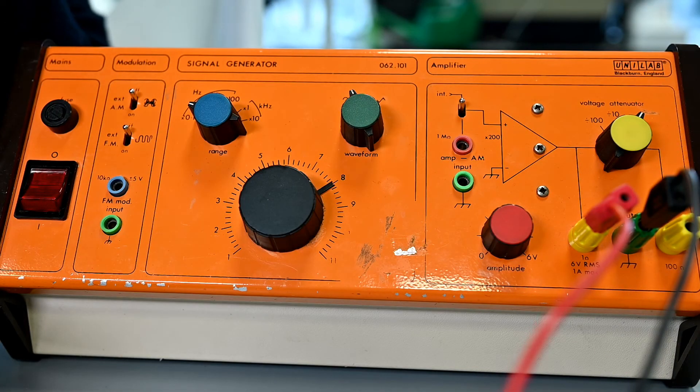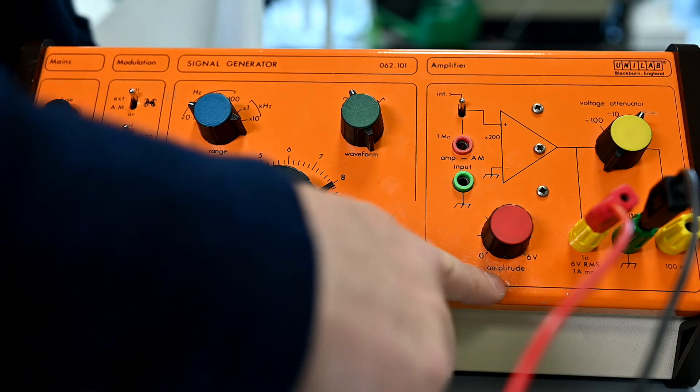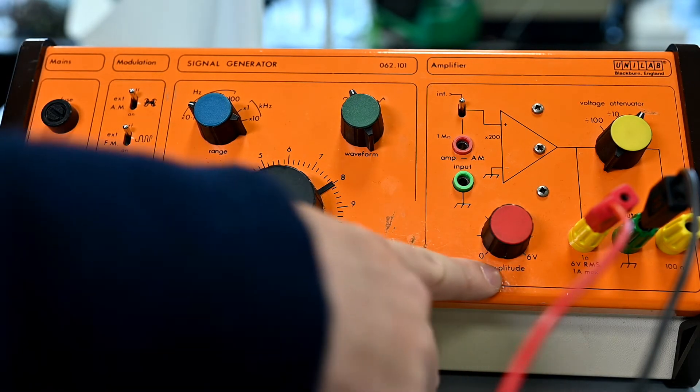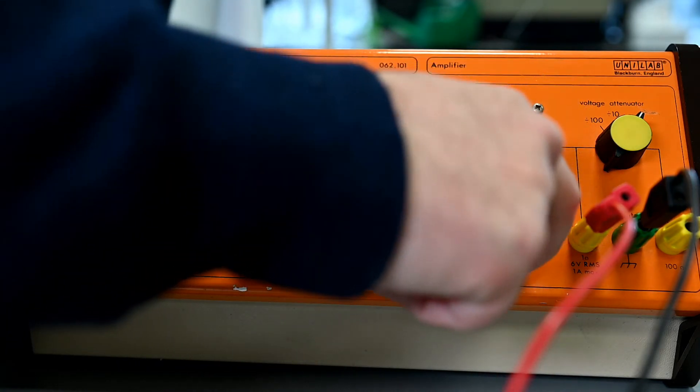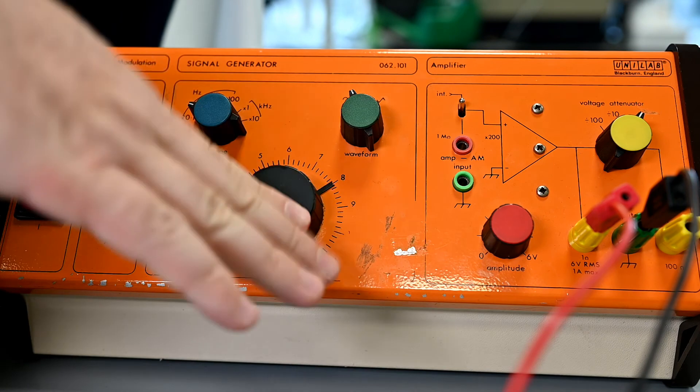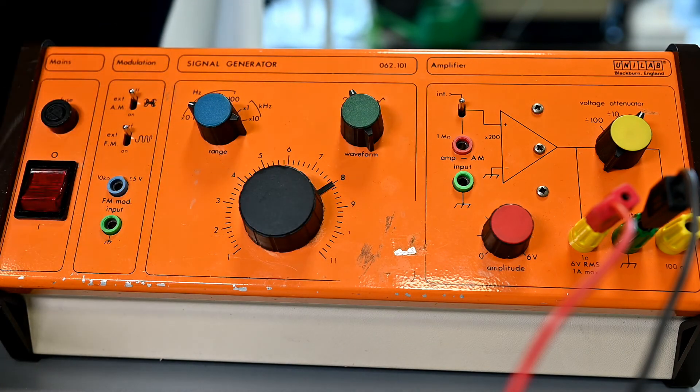The output is controlled by the amplitude dial here. You can go from zero to maximum and that will control the maximum output signal. You want to remain at one amp or less, otherwise you will damage your vibration generator.